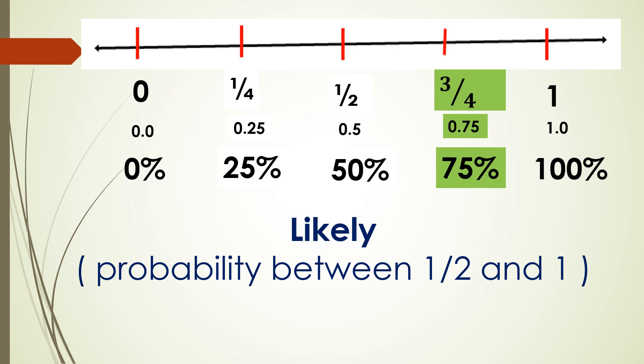We are also using the term likely. This is the probability between 1/2 and 1. In this particular situation, the probability that something may happen is greater than the probability that it may not happen. The event is not really 100% sure to happen, but it has a very big chance.